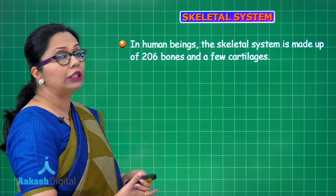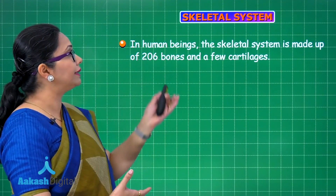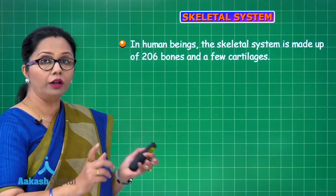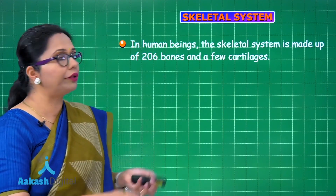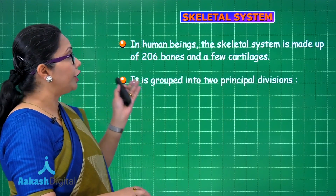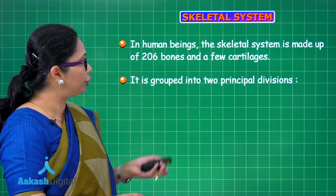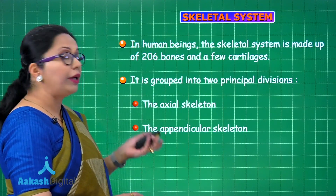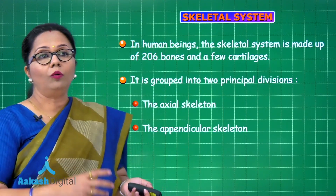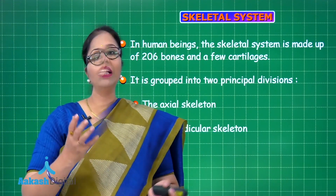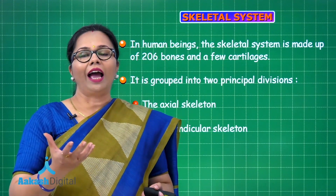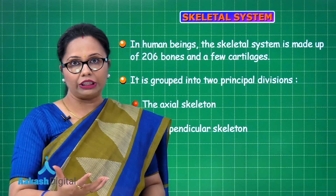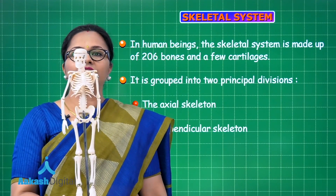Moving on to the human skeletal system: in human beings the skeletal system is made up of 206 bones and a few cartilages. The magic number is 206. It is grouped into two principal divisions: the axial skeleton and the appendicular skeleton.